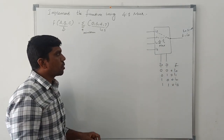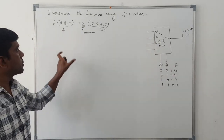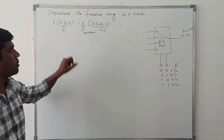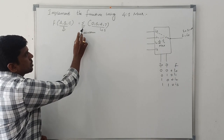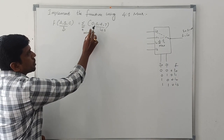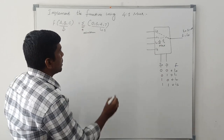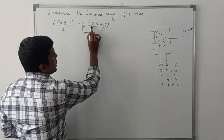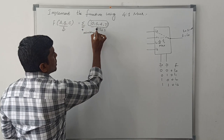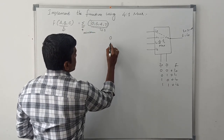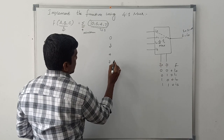This is the basic operation of the 4-to-1 MUX. Now I am going to solve the given problem: F(A, B, C) = Σ(0, 3, 4, 7). First, I write the binary representation for each given minterm: 0, 3, 4, 7.